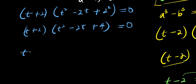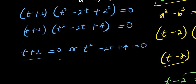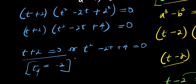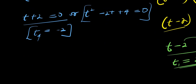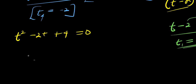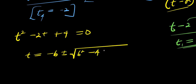So from here we are going to have t plus 2 equals 0, or t squared minus 2t plus 4 equals 0. If t plus 2 equals 0, that means we have t equals negative 2 — this can be our t₄. So let's solve this quadratic equation for t₅ and t₆. We have t squared minus 2t plus 4 equals 0. We make use of the formula method, which is t equals negative b plus or minus square root of b squared minus 4ac, divided by 2a.